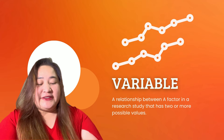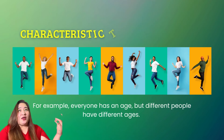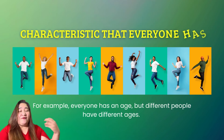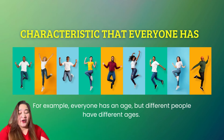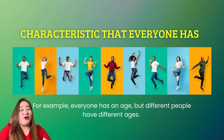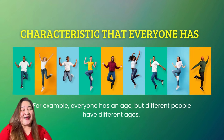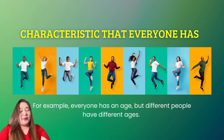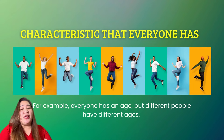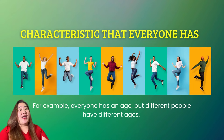What exactly is a variable? A variable is a factor in a research study that has two or more possible values. For example, everyone has characteristics, but different people have different values — such as age, where different people have different ages.